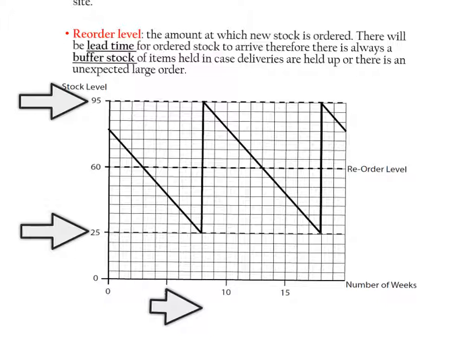We know that their reorder level is at 60 levels of stock. Now their maximum levels of stock is 95, and their buffer stock is 25. Now in terms of working out their lead time, so first of all if we have a look at, I'm just going to put a little point of where it was. So each square is one. If we focus on this one here, so one, two, three weeks.